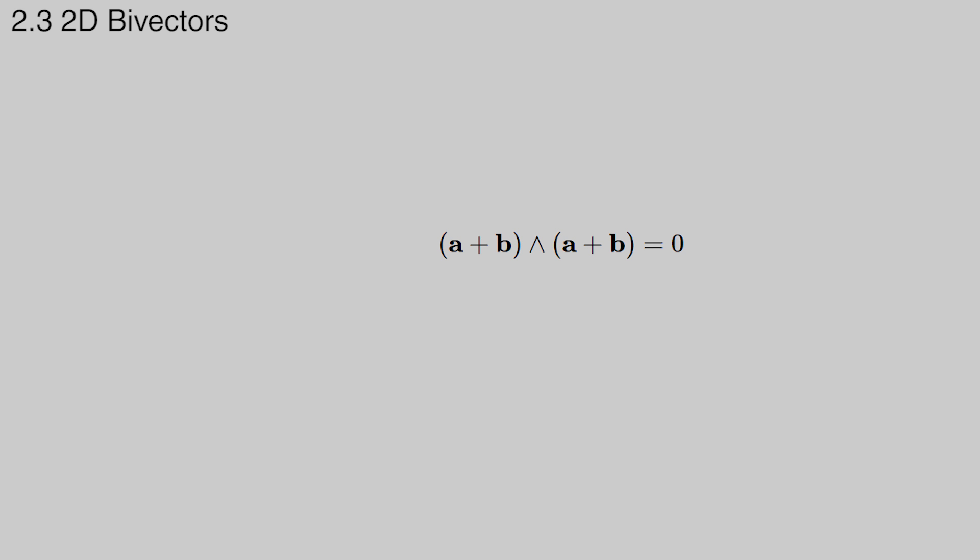This simple property defines what a bivector is. By looking at the sum of two vectors, we can see that this property implies the following. We just need to expand the product and delete the terms that square to zero. a outer b is equal to minus b outer a.